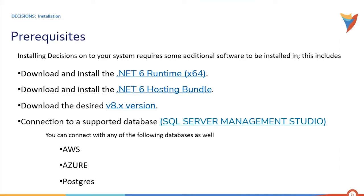In addition to .NET, we also need to install a database. For ease of demonstration I'll be connecting with SQL Server Management Studio, which I have already installed. We can also connect Decisions v8 with other databases such as AWS, Azure, and PostgreSQL. A key differentiator in version 8 is that it is self-hosted — previously on version 7 and 6 we hosted on IIS, but now there is no requirement for IIS; we can self-host.